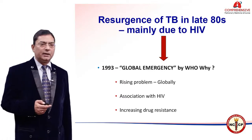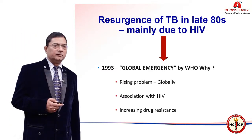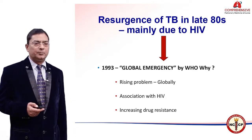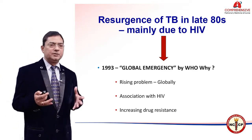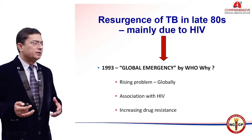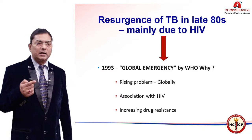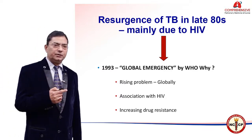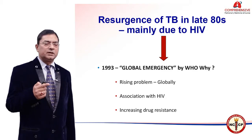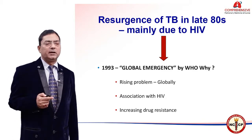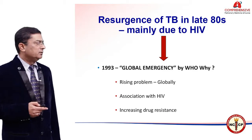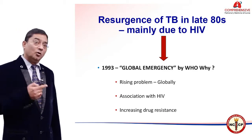However, in 1980 and 1981, there was a resurgence of tuberculosis, mainly due to HIV. As we know, HIV is closely associated with tuberculosis, and this led to a resurgence of the disease. That is why WHO in 1993 declared tuberculosis as a global emergency — another important landmark in the history of tuberculosis.